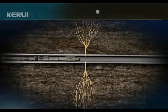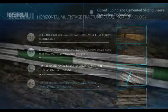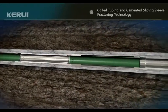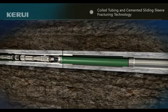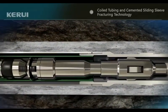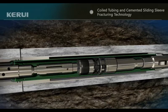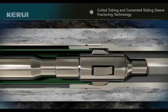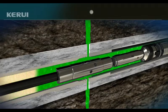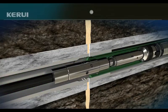Coiled tubing and cemented sliding sleeve fracturing technology: we trip the coiled tubing well completion string with the fracturing tool and straddle packer to the required well depth adjacent to our preset sliding sleeve. The preset sliding sleeve is opened hydrostatically through the coiled tubing, and we proceed to fracturing operations through the coiled tubing. After operations for each stage are completed, we pick up the string to the next stage and repeat the process until multi-stage hydraulic fracturing treatment is completed.